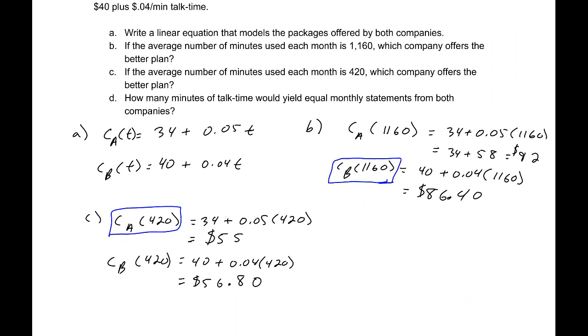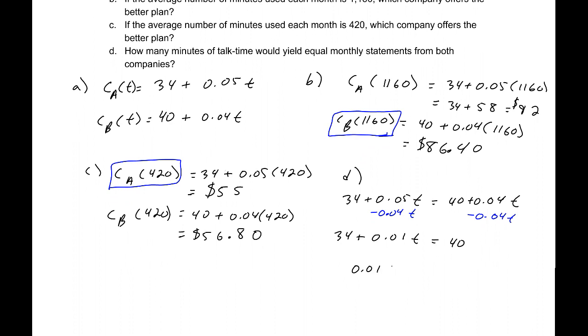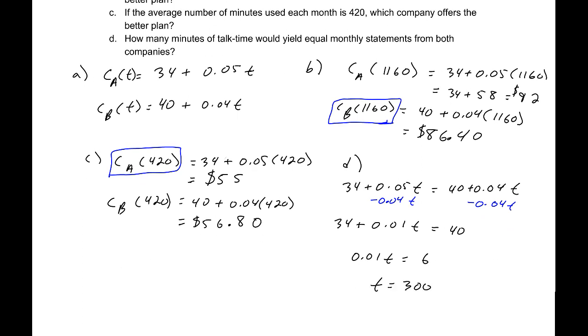The question is, for how many minutes of talk time would we have equal monthly statements for both companies? We're going to set our two equations equal. $34 plus 0.05t equals $40 plus 0.04t. Subtracting 0.04t from both sides, that would be $34 equals 0.01t plus $40. Subtracting 40 from both sides, 0.01t equals negative 6. Dividing both sides by 0.01, t would equal 600 minutes exactly.